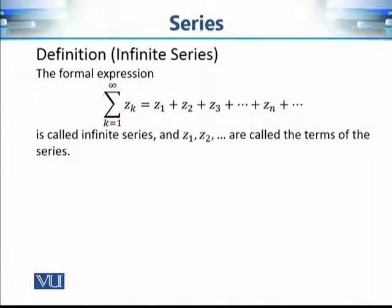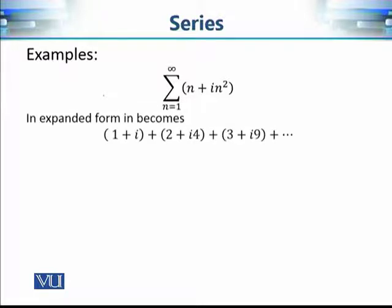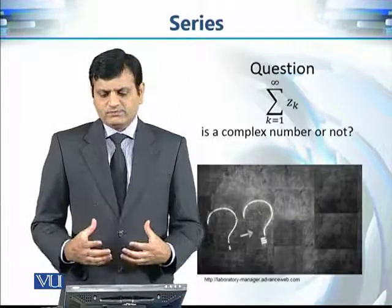Let's begin with the definition of series, or infinite series to be very precise. One such example is n plus iota n squared. When n equals 1, it gives the first term of the series; when n equals 2, it gives the second term, and so on. We can vary n from 1 to infinity to get infinitely many terms. This series is basically about adding all of these complex numbers — it is an infinite sum of complex numbers. We are interested in whether this infinite sum is some finite complex number or infinity.